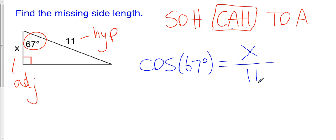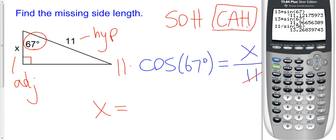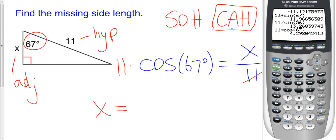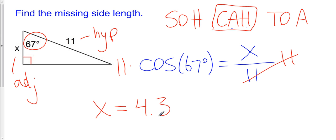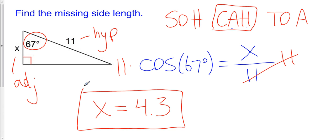x is already on top, so it's going to take just one step to solve this. I simply multiply both sides by 11 to isolate x, giving me x equals 11 times the cosine of 67. Plugging that in: 11 times the cosine of 67 gives about 4.3. And that is how you can find the missing side of a right triangle using trigonometric ratios when you're given an acute angle and one of the other sides.